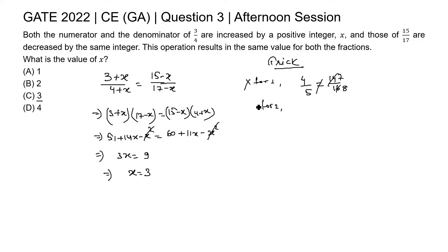If we put 2, then 3 plus 2, 5 and 4 plus 2, 6. This one 15 minus 2, 13 and 17 minus 2, 15. Again, this is not equal, so this option is again wrong.